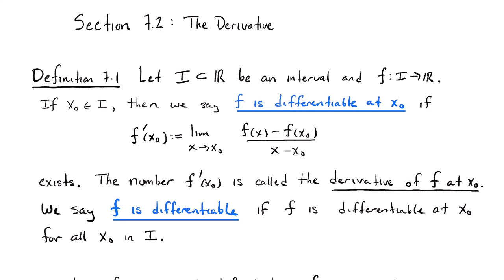To get going here, the main definition of the section is what it means for a function to be differentiable at a point. The preamble: I've got an interval. The domain of my function is an interval of numbers — open interval, closed interval, bounded, unbounded, it doesn't matter — but it's some interval of numbers.